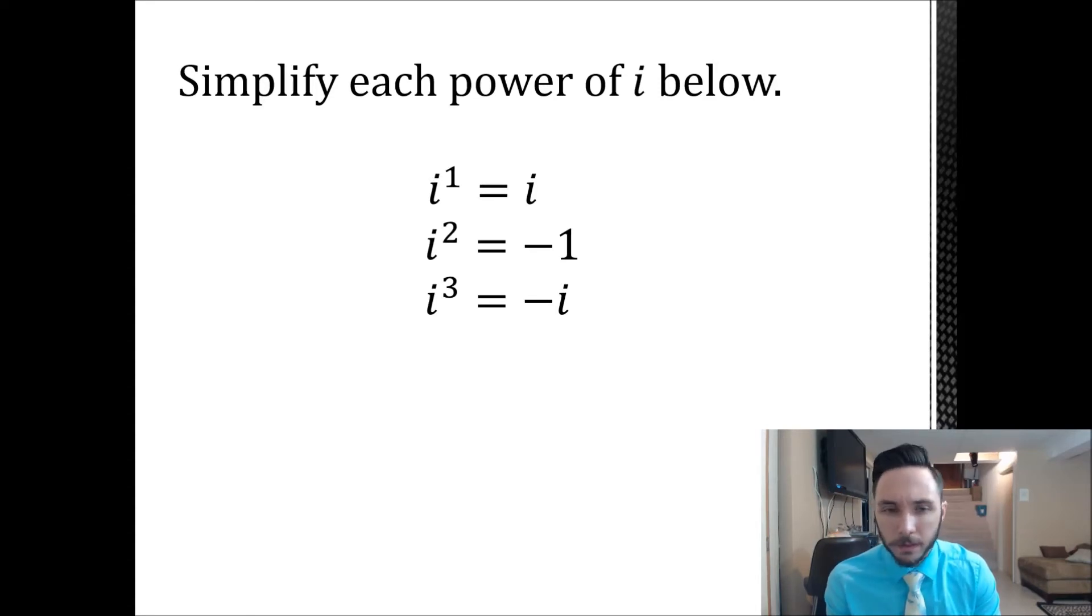Let's look at i to the fourth. We can break that into i squared and i squared. If we have i squared times i squared, we know i squared is negative one. And we know the other i squared is negative one. So negative one times negative one, that's just one.